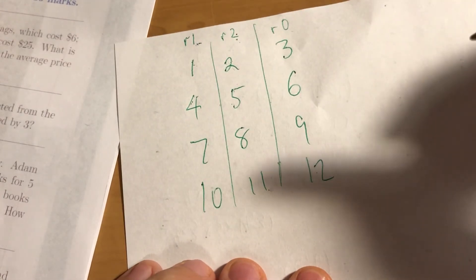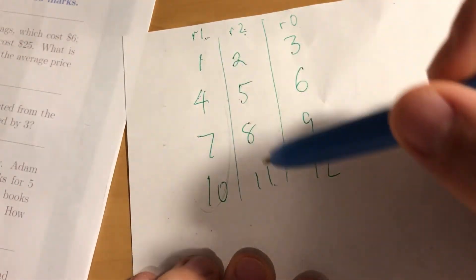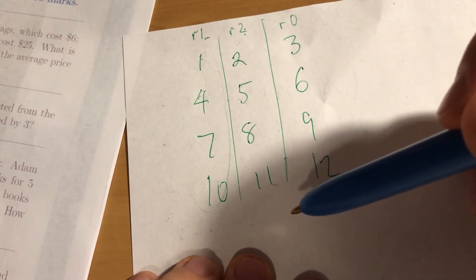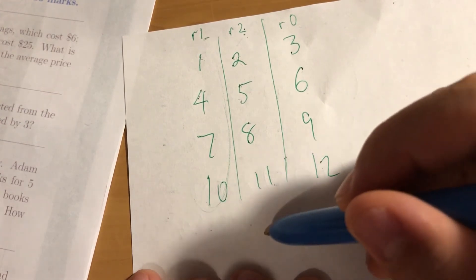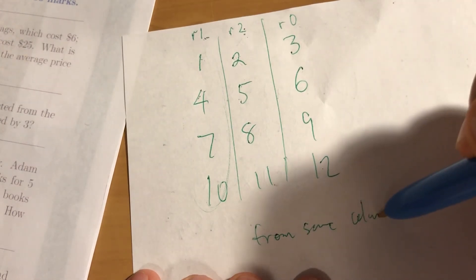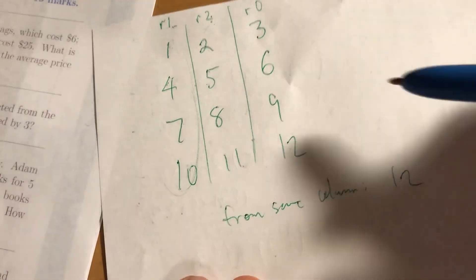And if you do that, you know, there's 4 ways to pick 3 numbers from 4 numbers because it's the same as the 4 ways of leaving out the 4th number. So from the same column, there's 12 ways, 4 plus 4 plus 4.